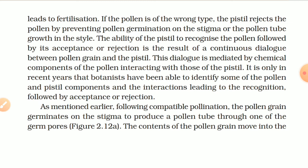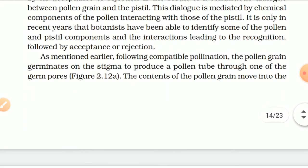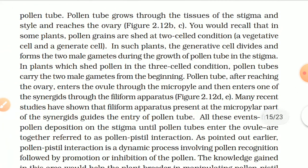The ability of the pistil to recognize the pollen, followed by its acceptance or rejection, is the result of continuous dialogue between pollen grain and the pistil. This dialogue is mediated by chemical components of the pollen interacting with those of the pistil. It is only in recent years that botanists have been able to identify some of the pollen and pistil components and the interactions leading to recognition followed by acceptance or rejection. Following compatible pollination, the pollen grain germinates on the stigma to produce a pollen tube through one of the germ pores. The contents of the pollen grain move into the pollen tube, which grows through the tissues of the stigma and style and reaches the ovary.